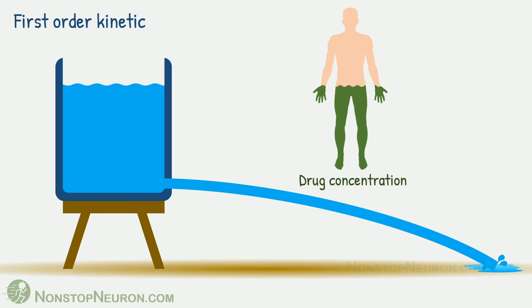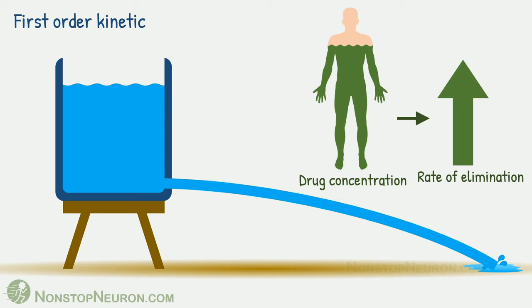First order elimination kinetics is something similar. Here also, as drug concentration in the body increases, its rate of elimination also increases. That means the more the drug in the body, the faster it is removed.